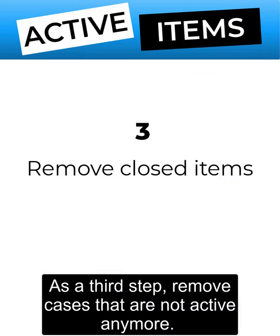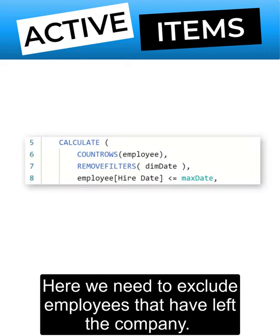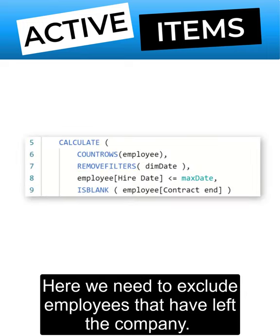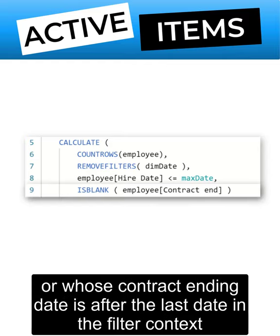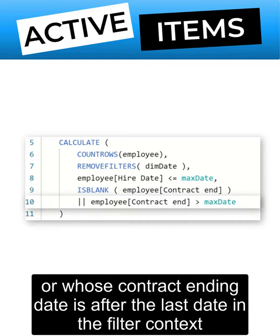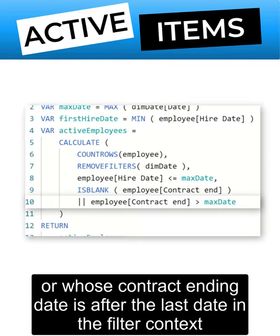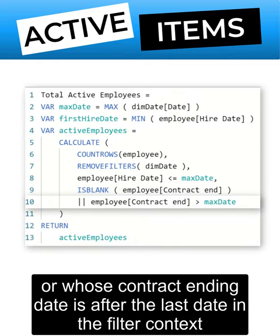As a third step, remove cases that are not active anymore. Here, we need to exclude employees that have left the company. So we only want to count employees for whom there's no contract ending date, or whose contract ending date is after the last date in the filter context.